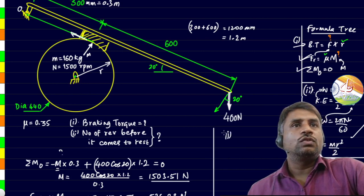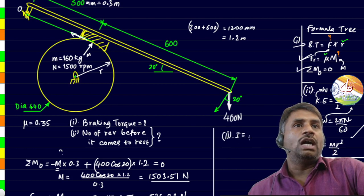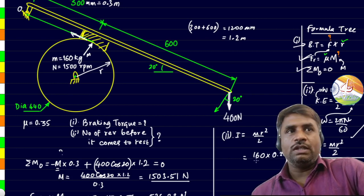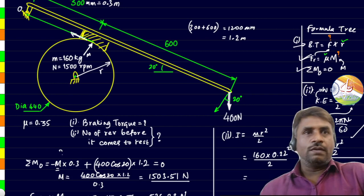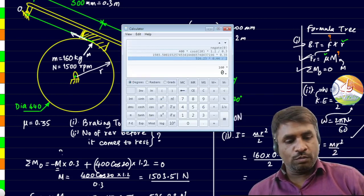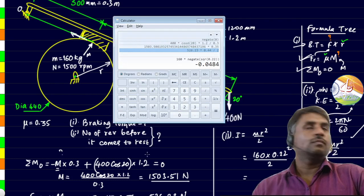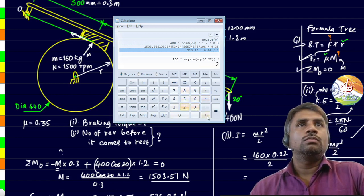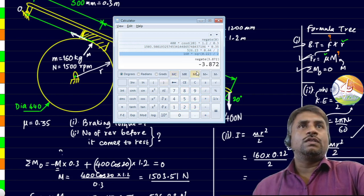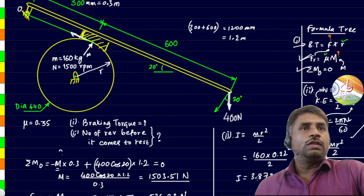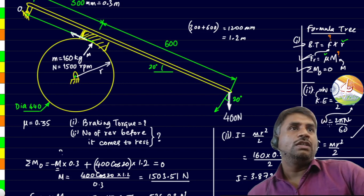Let's start solution for the second bit. First let us find I, that is mass moment of inertia. That is m r square by 2. Mass is 160, radius is 0.22 in meters, square of that divided by 2. Let's find it. That is 160 into 0.22 square of this divided by 2. That is 3.87 kg meter square. That's the value of I, the mass moment of inertia.